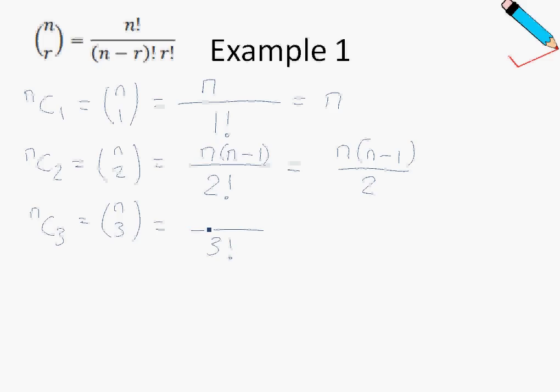And the numerator will start with n. Because as you see, an n over here—we will decrease each time by 1. So n minus 1, n minus 2.